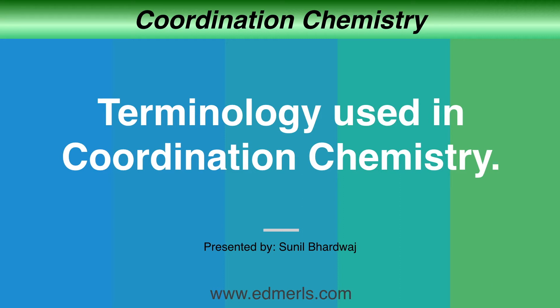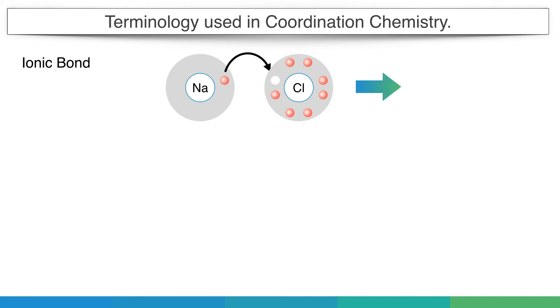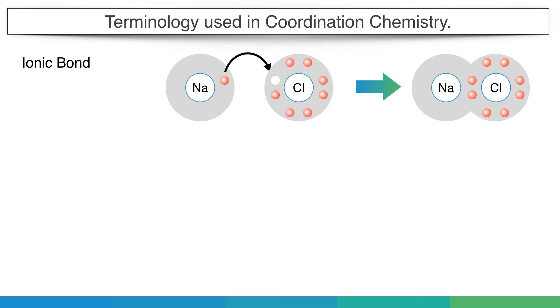How is a coordination bond different from ionic or covalent bonds? The ionic bond is formed between two atoms of different electronegativity by transfer of one electron from the electropositive to the electronegative atom. Like in the case of sodium chloride, sodium is electropositive and gives one electron to electronegative chlorine. Thus, sodium will have two electrons and chlorine will have eight electrons in their outermost orbital.